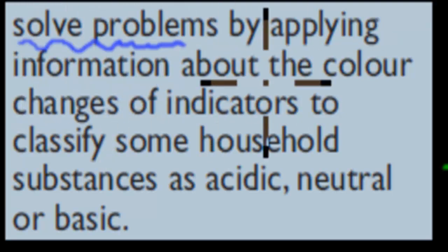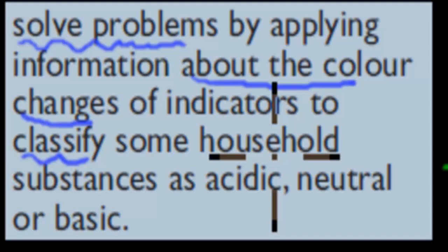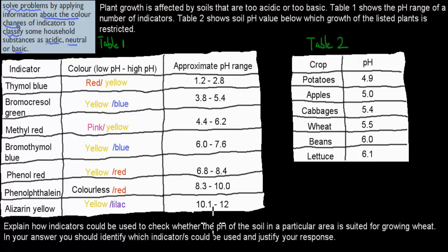And we have to apply information about color changes, so we get tables of that, of indicators to classify substances, household substances, as acidic, neutral or basic. In this video, we're actually going to cover this question. And it's not a question to do with household substances, but it's a very similar one to what kind of questions you would have to face in your HSC. And this question actually comes from the Success 1 Excel series, so just to give credit where credit is due.